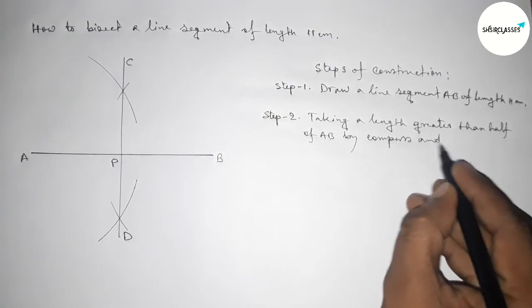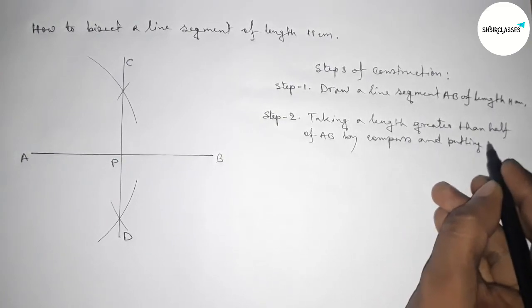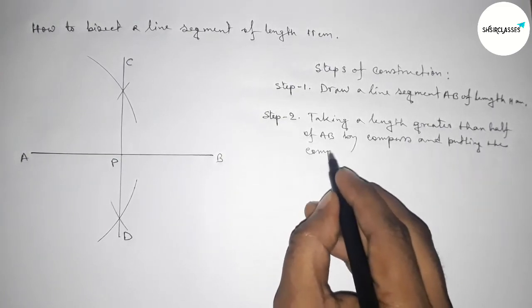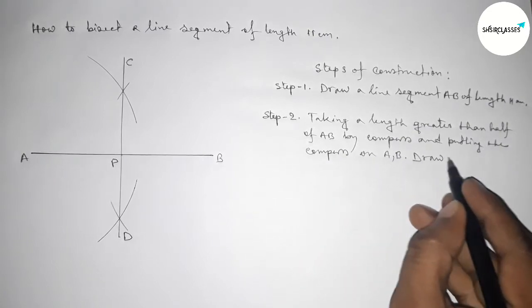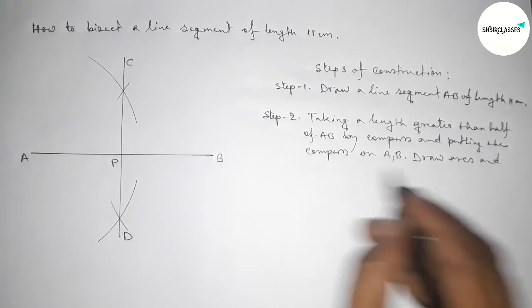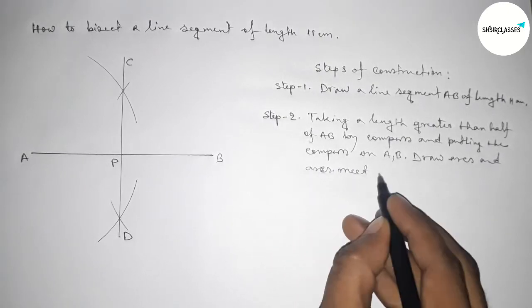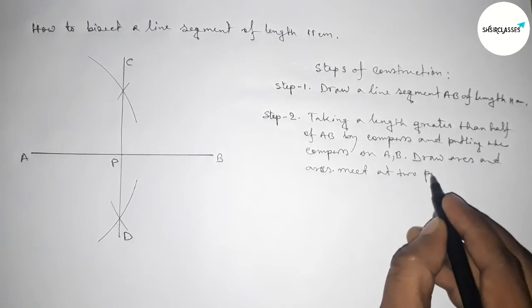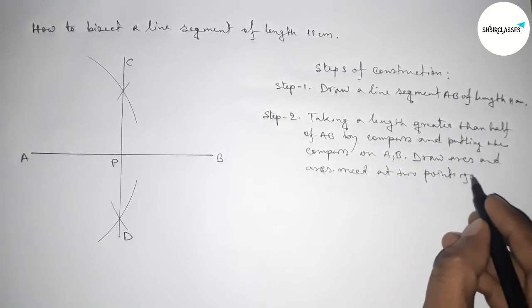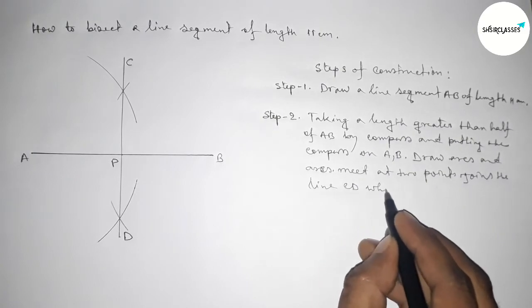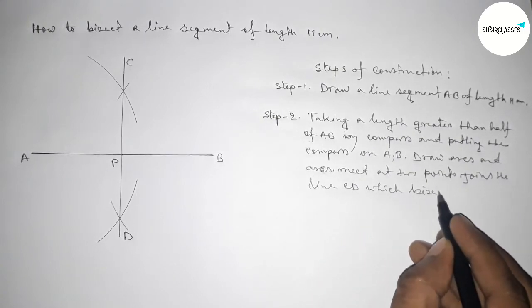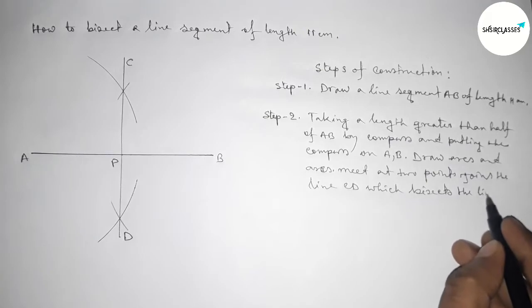And putting the compass on the point A and B and draw arcs, and arcs meet at two points. So join the line CD which bisects the line AB at the point P.